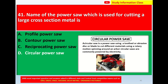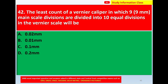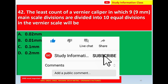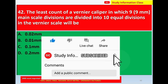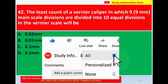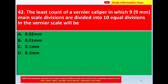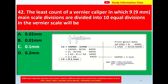Next question: The least count of a vernier caliper in which 9 mm main scale divisions are divided into 10 equal divisions on the vernier scale. Options: A) 0.02 mm, B) 0.01 mm, C) 0.1 mm, D) 0.2 mm. The correct answer is 0.1 mm.